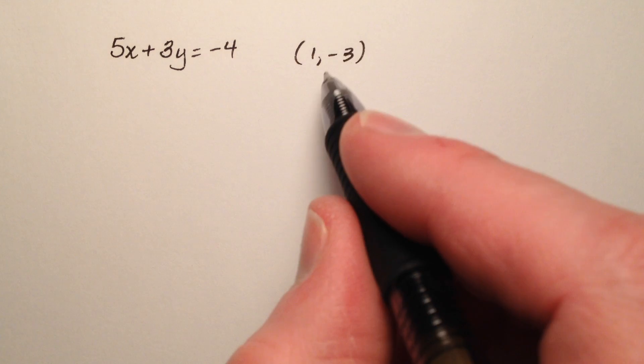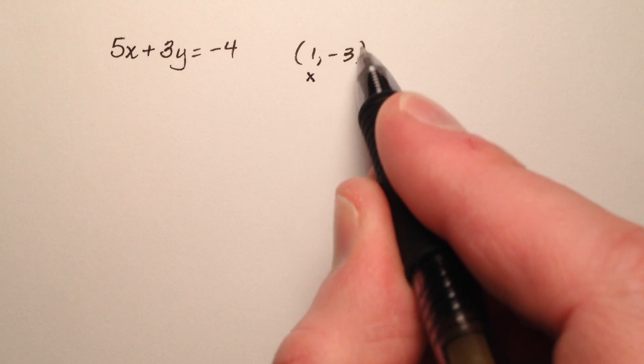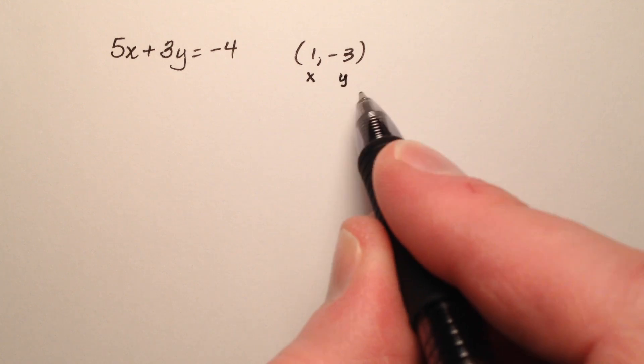So given this ordered pair, I know that 1 is my x value, or my x coordinate, and negative 3 is my y value, or my y coordinate.